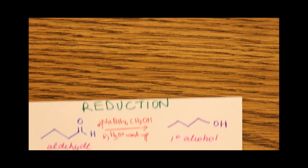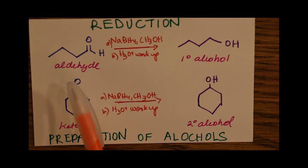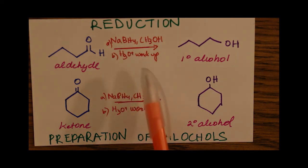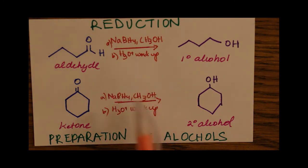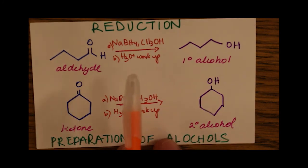The next reduction reaction covers aldehydes and ketones. The only difference here is there's no double bond in the ring. Aldehydes get reduced to primary alcohols and ketones to secondary alcohols, as we saw before. But this time we don't have to use lithium aluminum hydride. We can use sodium borohydride, methanol, and an acid workup. These conditions are sufficient to yield primary alcohols from aldehydes and secondary alcohols from ketones.